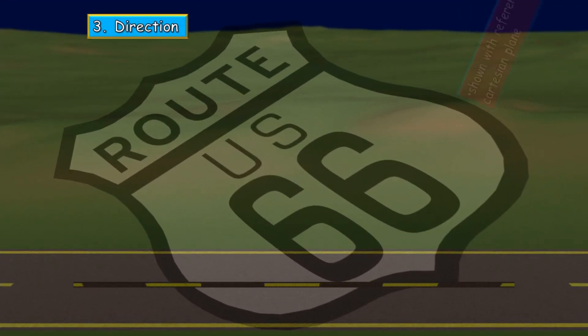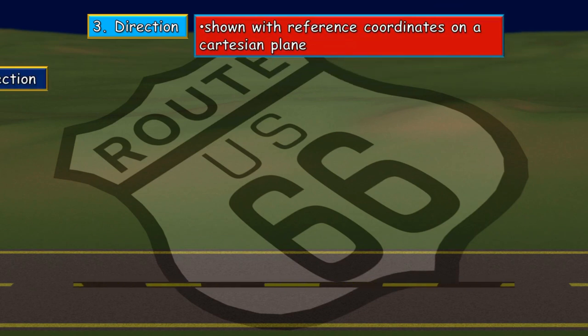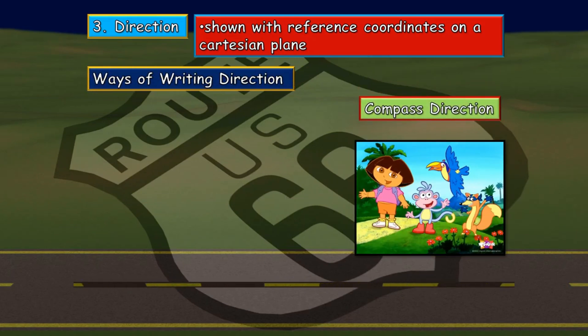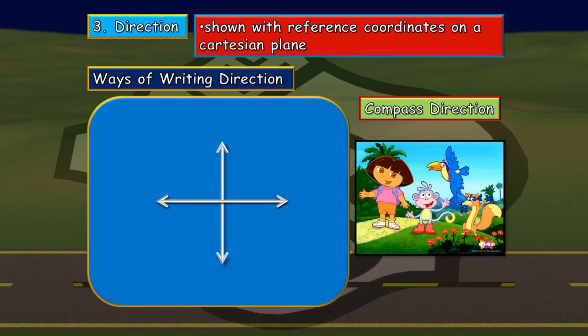Third, we have direction. Direction shown in reference coordinates on a Cartesian plane. Ways of writing direction is through the use of compass direction. As we all know, we write or read the direction based on the Cartesian plane in a clockwise form. From north, east, south, west, going back to north. If that is north going to east, that is 90 degrees. North going to south, that is 180 degrees. And going back to the starting position, that is 360 degrees. That is the equivalent angle of a particular direction that we have which is very essential in our bearing discussion.